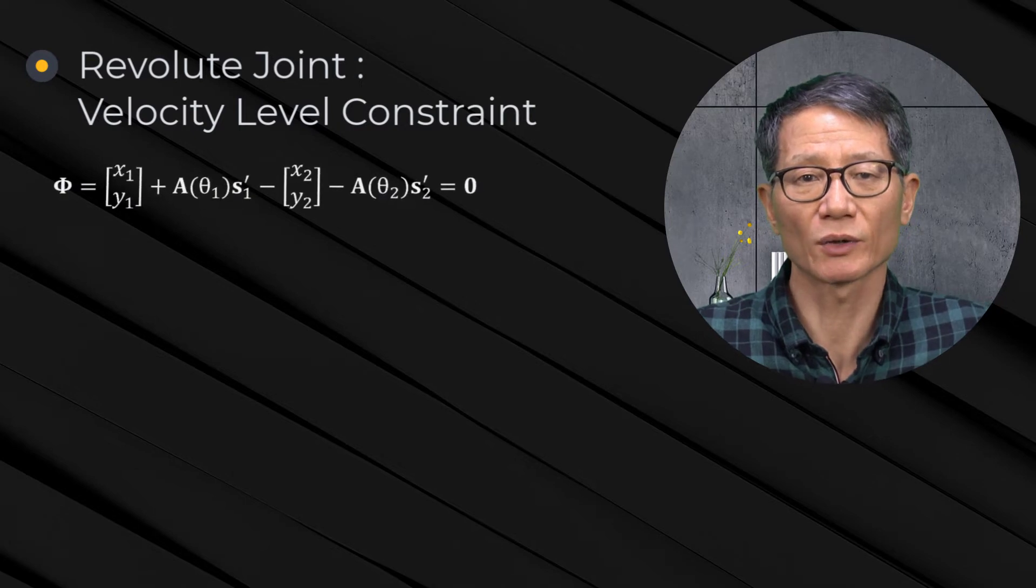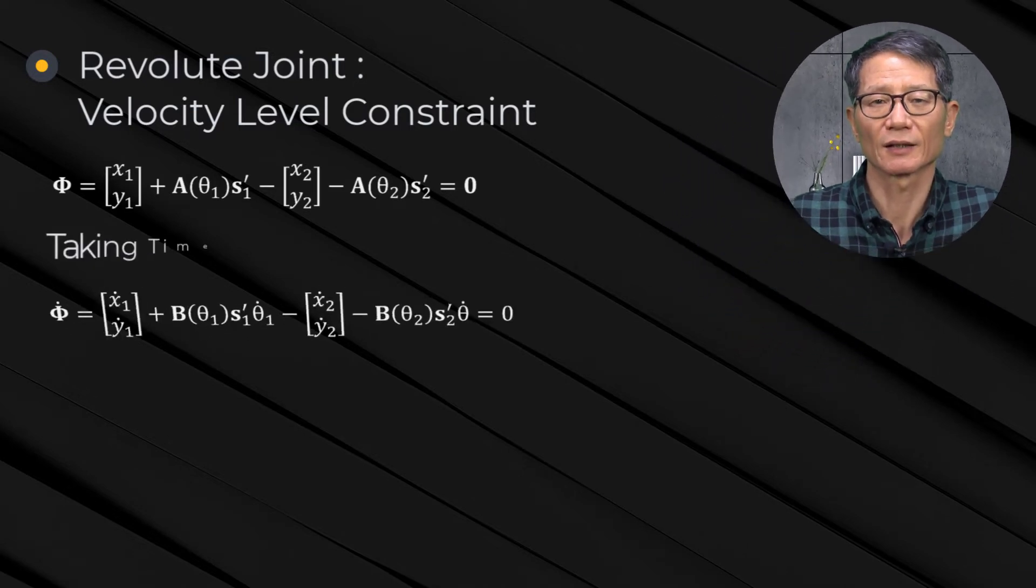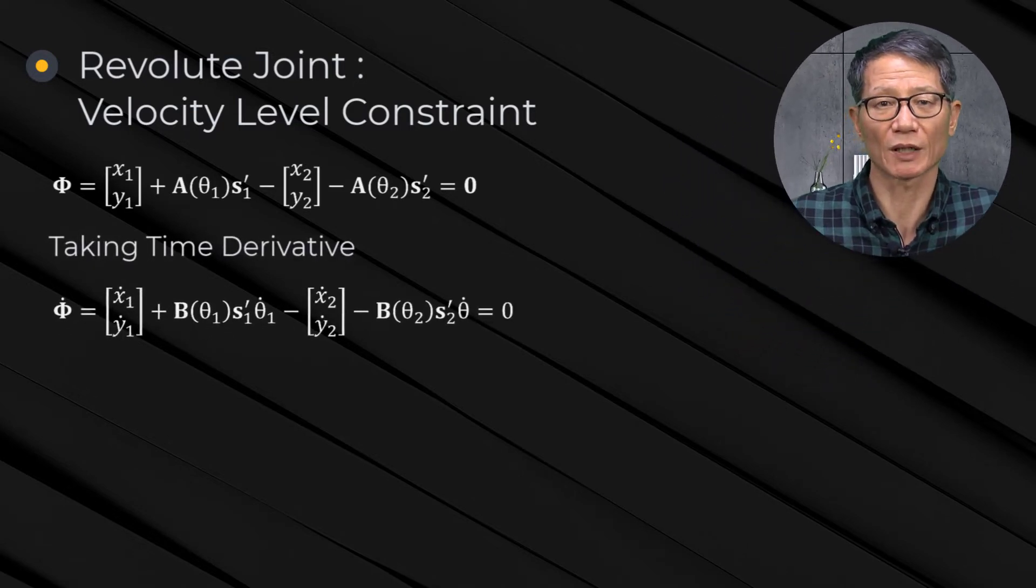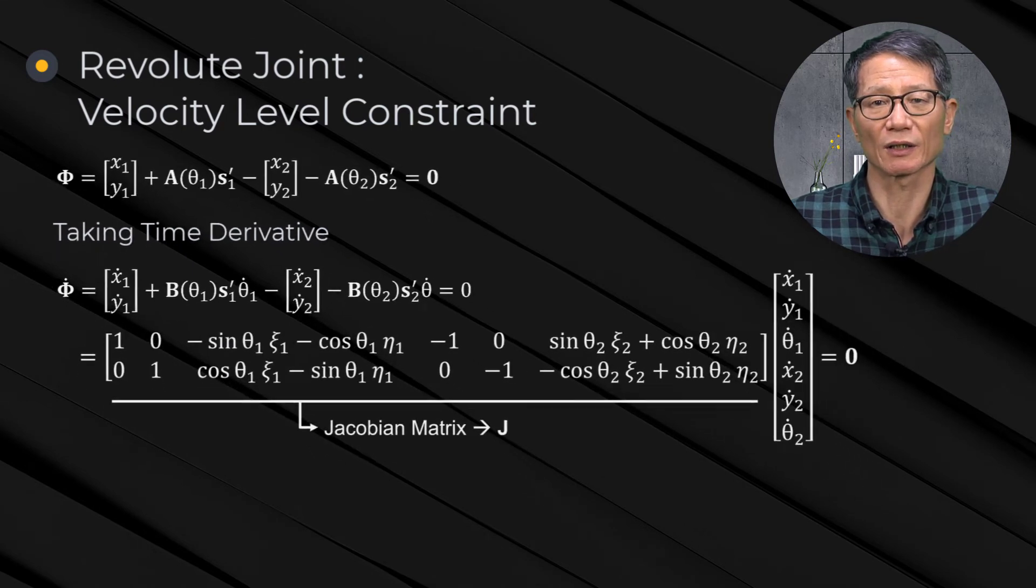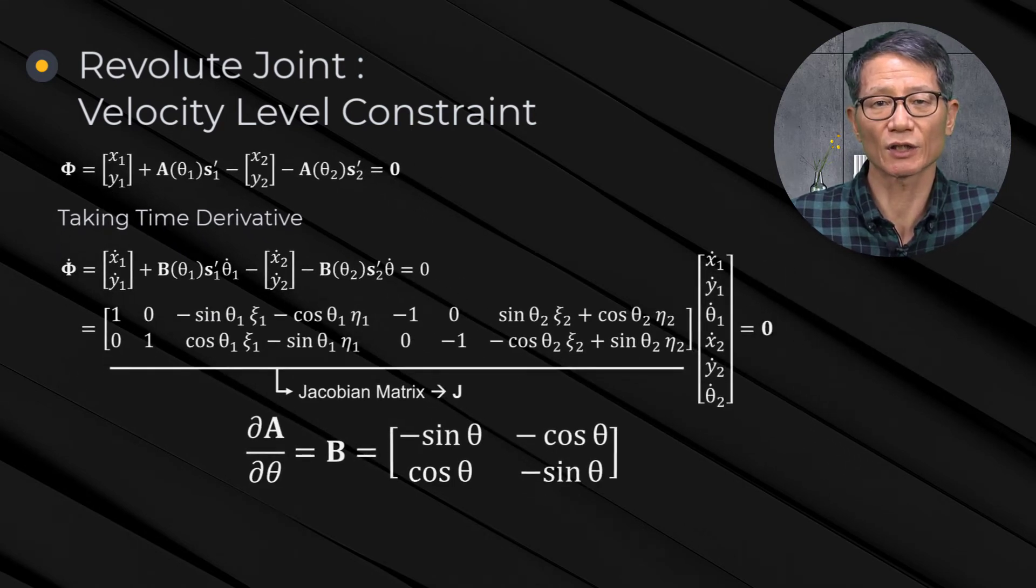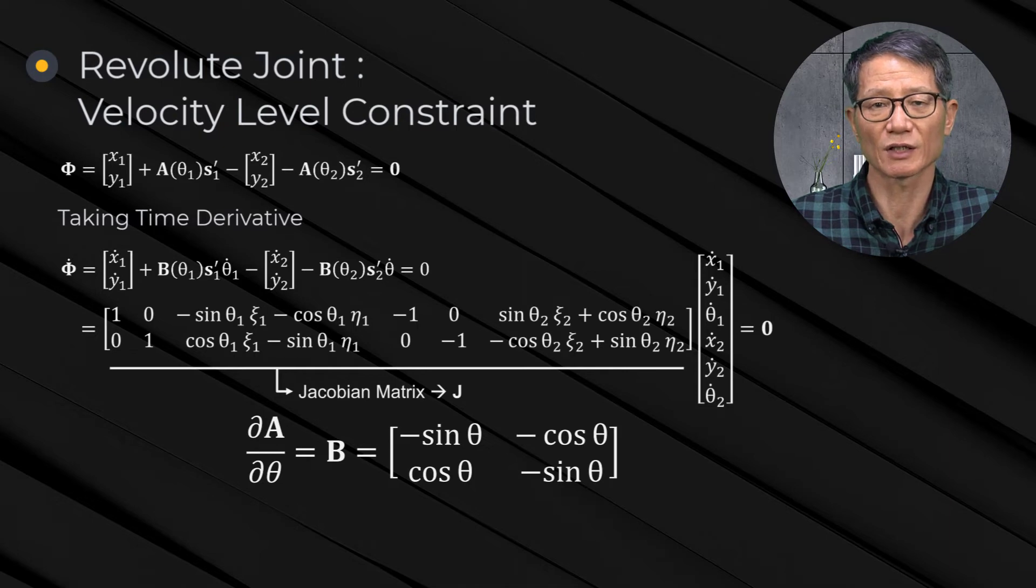The generalized coordinates are substituted into the constraint equation to obtain the following equations. Taking the time derivative of the constraints is the following velocity level constraint equation. Here, the partial derivative of the orientation matrix A with respect to the angle theta is obtained as in this equation.